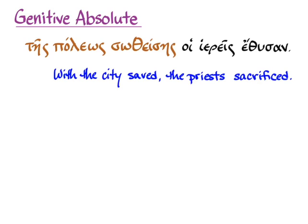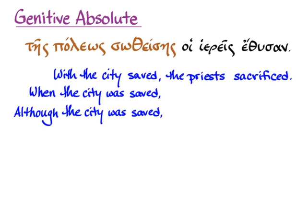We can also translate the genitive absolute in any of the other ways we translate circumstantial participles in English. So it could be temporal — 'when the city was saved, the priests sacrificed' — or concessive: 'although the city was saved, the priests sacrificed,' or causal: 'because the city was saved, the priests sacrificed.' All of these are good translations of circumstantial participles depending on your context. The negative for any of those would be 'ou.'